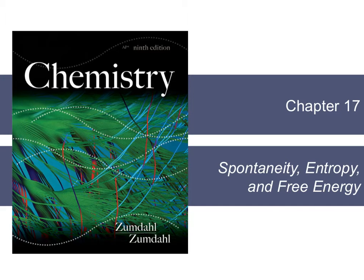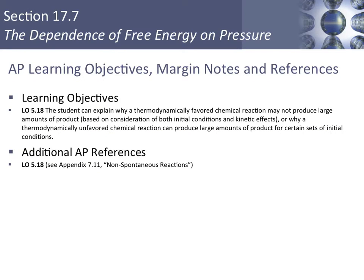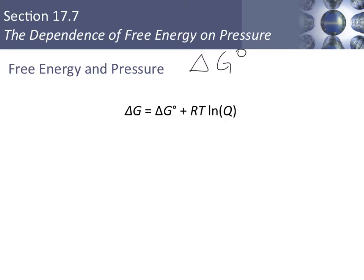Section 7 of chapter 17 is about the dependence of free energy on pressure, although we could also say the dependence of free energy on concentration as well. So far when we have been calculating the free energy change, it has been the standard free energy change at 25 degrees Celsius and one atmosphere.